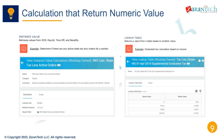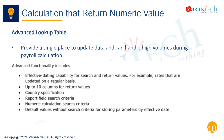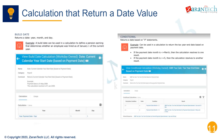More advanced numeric calculations may leverage lookup tables. These provide a single place to update data and can handle high volumes during payroll runs. For example, tax brackets and rates can be stored in a table and looked up based on marital status and gross pay. Lookup tables provide a single source of data that can be reused across calculations, which is helpful for handling high data volumes in payroll runs.